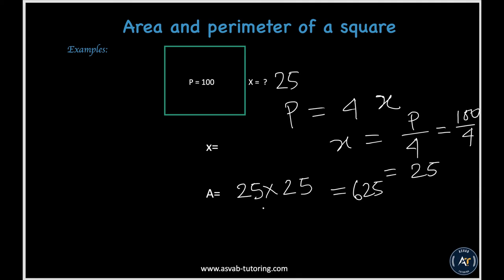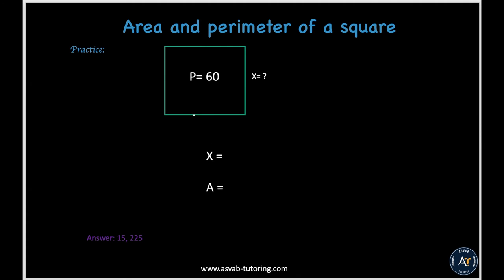Here is a practice problem: the perimeter of a square is given and you need to find the missing side and the area. Follow the same steps as before and check your answer.